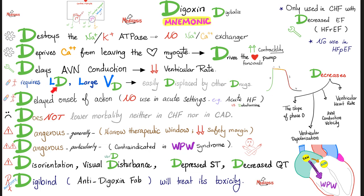Digoxin requires a loading dose and has a large volume of distribution, so it's easily displaced by other drugs because it binds hard to plasma proteins and tissue proteins. It has a delayed onset of action — so for acute heart failure, digoxin won't save the day; give dobutamine instead, which is fast. Digoxin is good for chronic use, not acute. Does digoxin lower mortality in CHF or MI patients? The answer is no — it improves symptoms but does not lower mortality or increase survival.